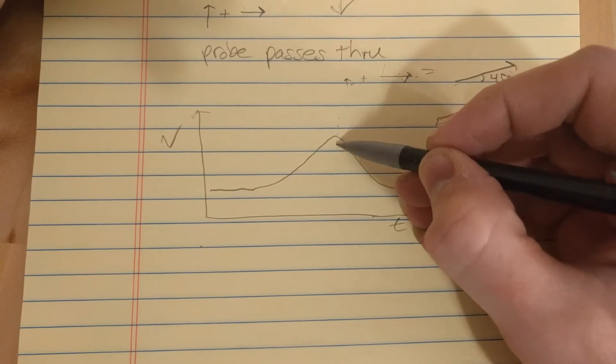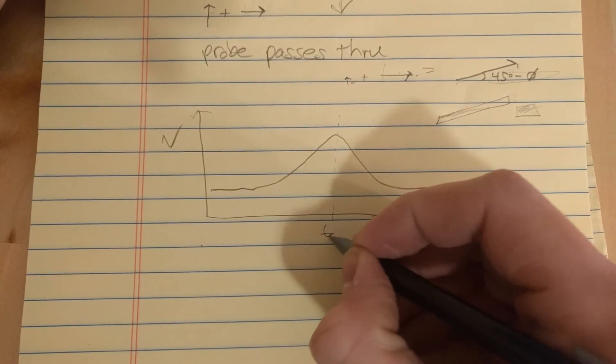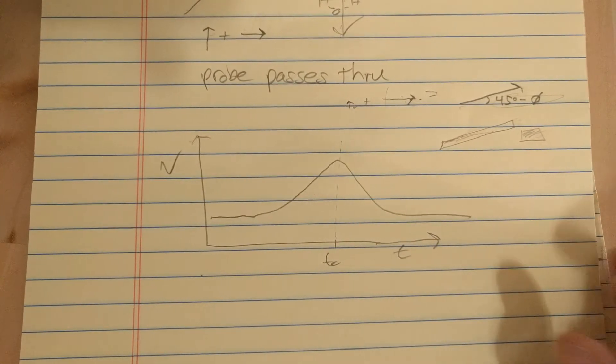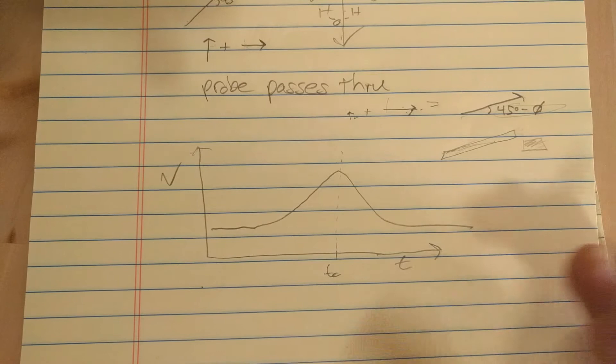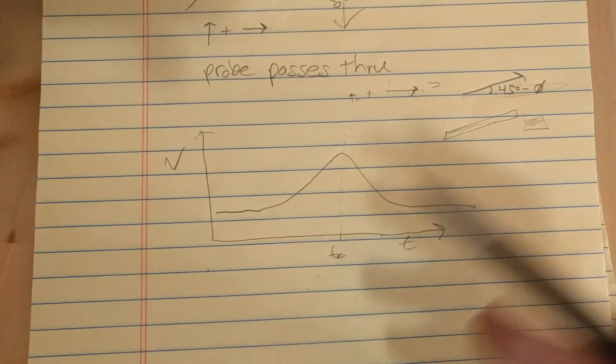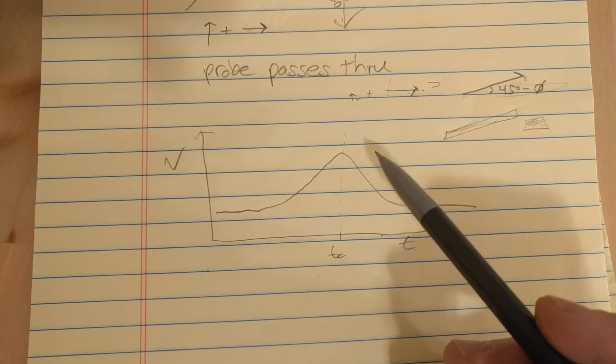And, you know you have timing at this maximum here. So, this time, T-naught is going to correspond to some number on your delay stage, and you know at that position of the delay stage, you have maximum overlap in time of your pulses.